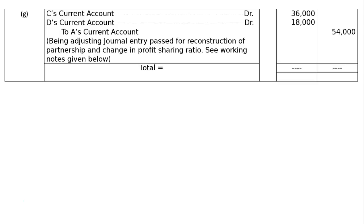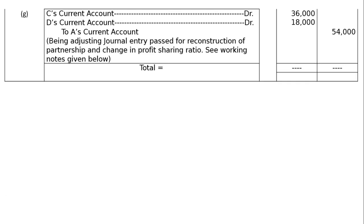Working notes complete. The journal entry for Part G — capitals are fixed so entries pass through current accounts: C's current account debited Rs.36,000; D's current account debited Rs.18,000; to A's current account Rs.54,000. Being single adjusting entry passed for reconstruction of partnership and change in profit sharing ratio — working notes given below. These are all independent entries and not connected to each other, hence they do not require totaling. This is the final answer.